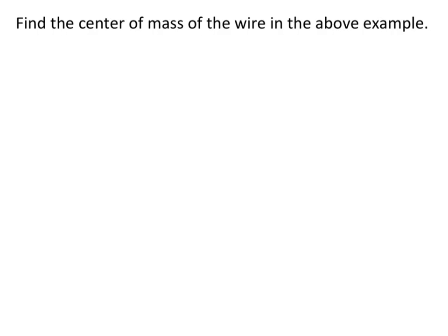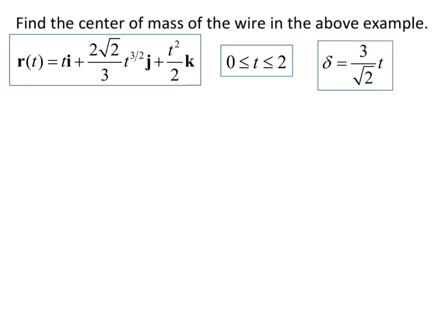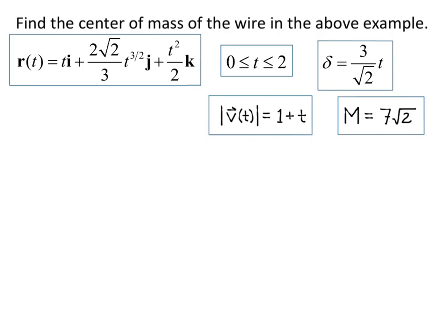Find the center of mass of the wire in the above example. From the example we know: R(t) = t·i + (2√2/3)t^(3/2)·j + (t²/2)·k, bounds t from 0 to 2, density delta = (3/√2)·t, magnitude of velocity = 1 + t, and mass = 7√2. We'll use all of these to find the center of mass.